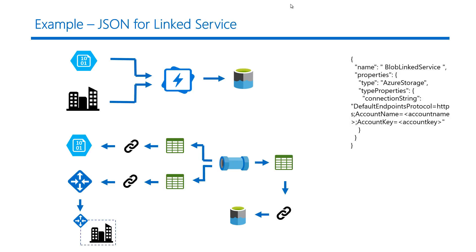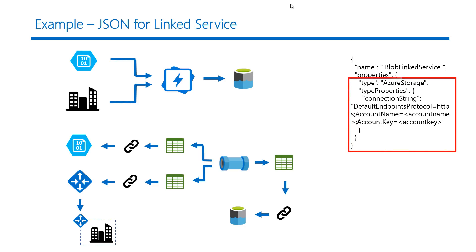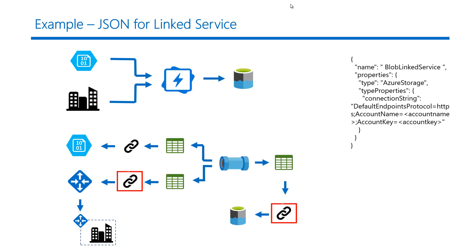Once we define the dataset, the next step is to define the linked service that the dataset will use to connect to the data store. Here we have a linked service that connects to blob storage, including connection details like the account name and account key. Similarly, we define linked services for the on-premise data store and Azure Data Lake Store.